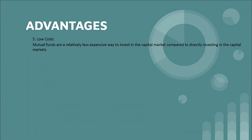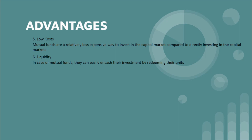The fifth advantage is lower cost. Mutual funds are relatively less expensive because when investing in a mutual fund you are actually buying a basket of securities, so the transaction cost and other costs will be lower compared to single transactions. The sixth advantage is liquidity. One of the main advantages is that we can redeem the mutual fund at any point in time. Unlike fixed deposits, mutual funds offer flexible withdrawal plans, though withdrawing before the maturity period may incur a pre-exit penalty.